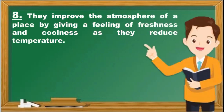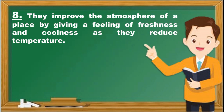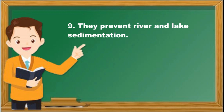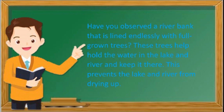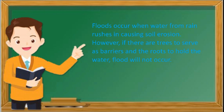Number eight, trees improve the atmosphere of a place by giving a feeling of freshness and coolness as they reduce temperature. Number nine, they prevent river and lake sedimentation. Trees lining rivers and lakes help hold the water and keep it there, preventing the lake and river from drying up. They also prevent floods — floods occur when water from rain rushes in causing soil erosion, but with trees as barriers, their roots hold the water and flooding is prevented.